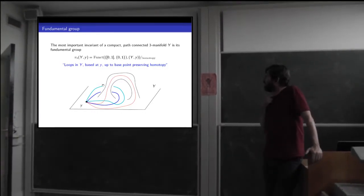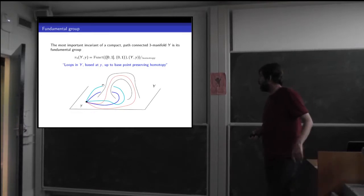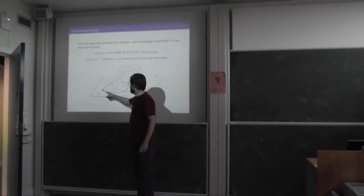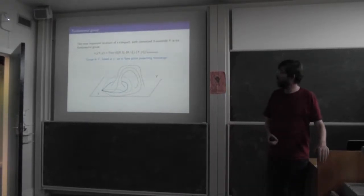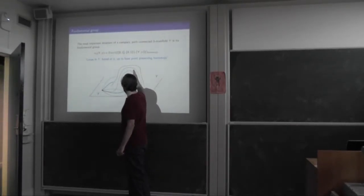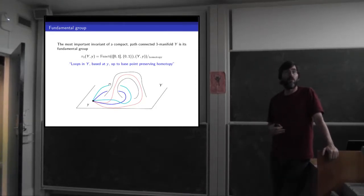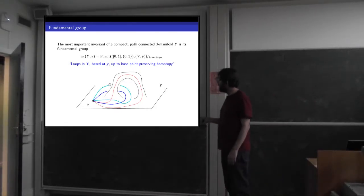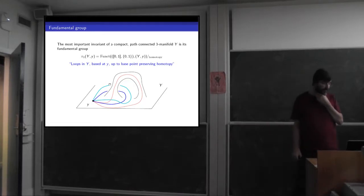I'd like to give you a feel for some of these interesting topological spaces you can get by studying representations of the fundamental group of a three-manifold and a two-manifold. The fundamental group is a group that you assign to a topological space. Its elements are loops in your topological space that start and end at the base point. The product of two loops is the loop you get by first going on one loop and then the other.